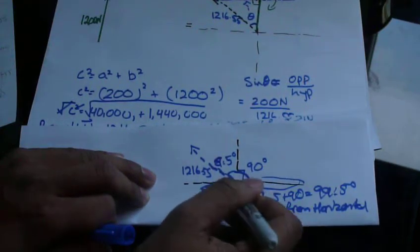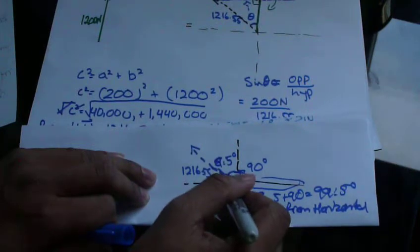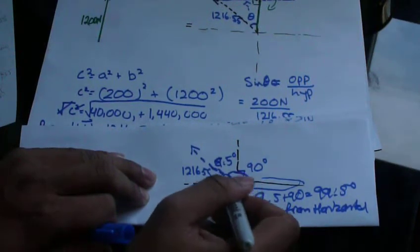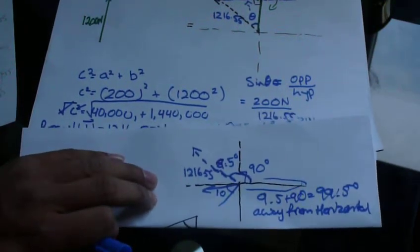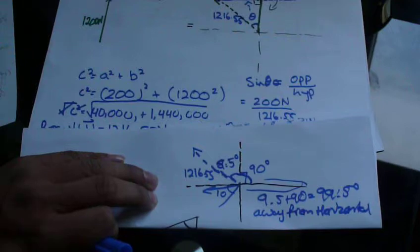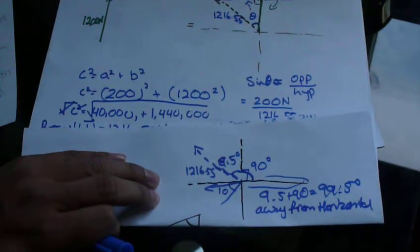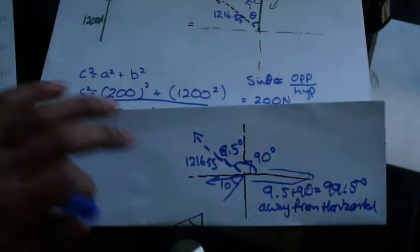If it was down here and it was, let's say, 10, you add the whole thing. So 10 plus 90 plus 90, 190 away from the horizontal. So always kind of reference your direction away from the horizontal, so they know which way and how the resultant vector that you summed is pointing or what direction it's in.